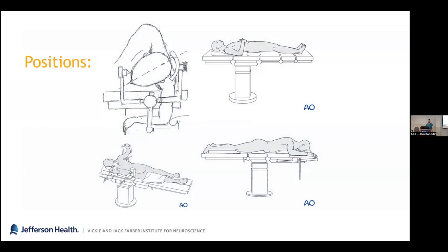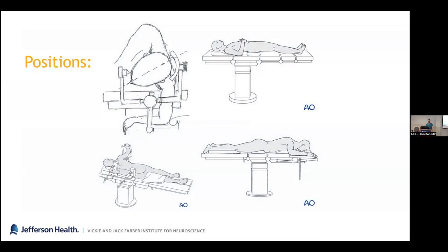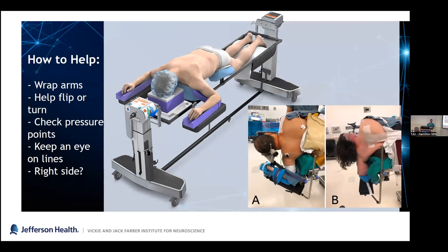For positioning, know the terminology: supine, prone, lateral, park bench, and everything in between. You can have a patient supine with just a little bump, all the way to fully lateral. When someone says we're going prone, know there will be a flip happening. Be helpful during positioning — look to see what anesthesia and residents are doing. We wrap the arms and pressure points with gel wraps, we're always checking the pads. If an arm is ready and unwrapped, pick up a gel wrap and put it on. Help with the flip and keep an eye on the lines.